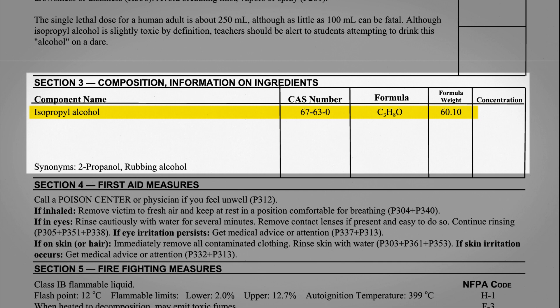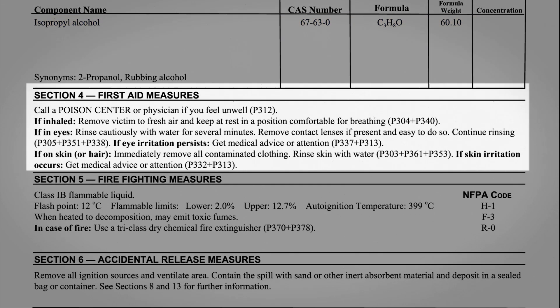Section 3 provides the formula or molecular weight for the chemical, or for each component if it contains more than one chemical. Section 4 describes simple first aid measures to follow if you are exposed. Exposure can occur by inhaling the chemical or getting it in your eyes or on your skin. First aid measures are written as standard precautionary statements: immediately wash any affected areas with plenty of water, and use the eyewash or safety shower if needed.